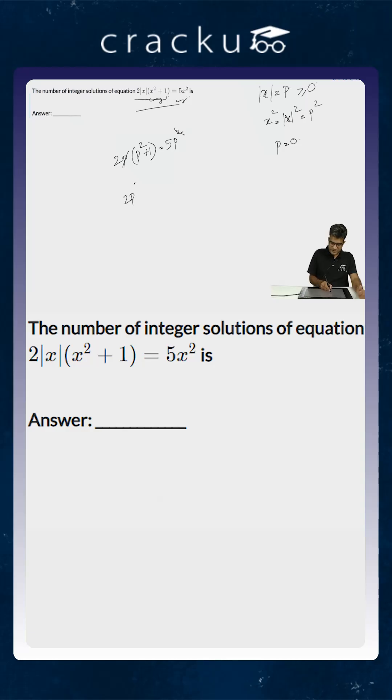So this would be 2p square minus 5p plus 2 is equal to 0. This can be simplified to 2p square minus 4p minus p plus 2 is equal to 0. This is 2p minus 1 into p minus 2 is equal to 0.